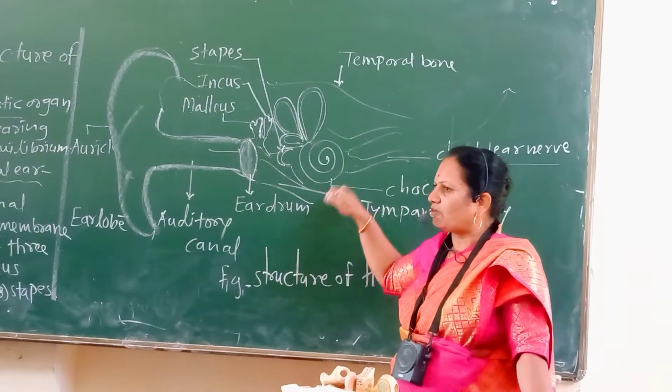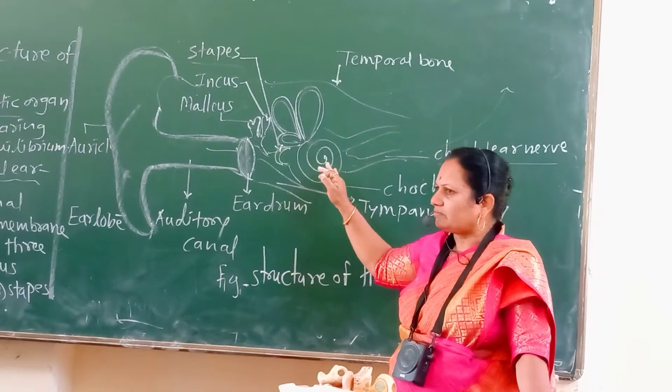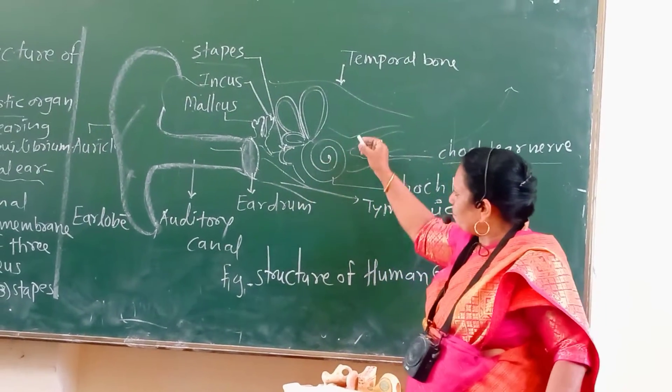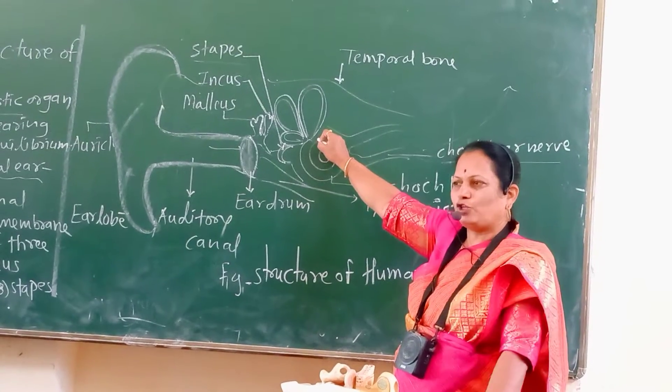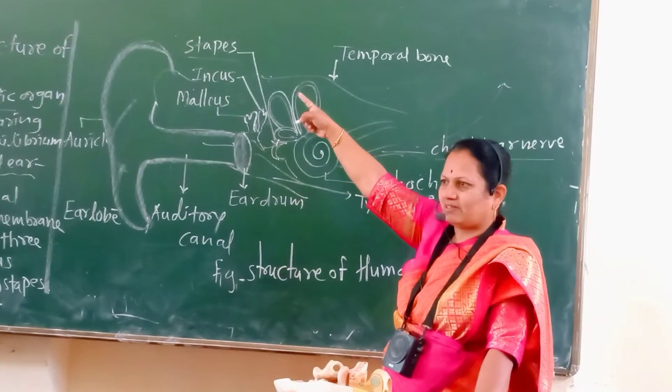What is the overall function of the human ear? Sense of sound. The smallest bone present in the human body is the stapes.